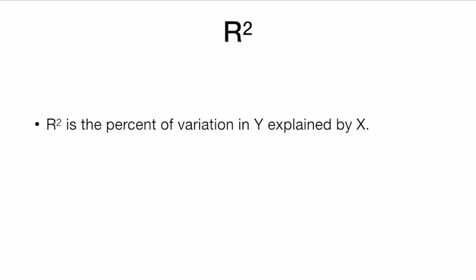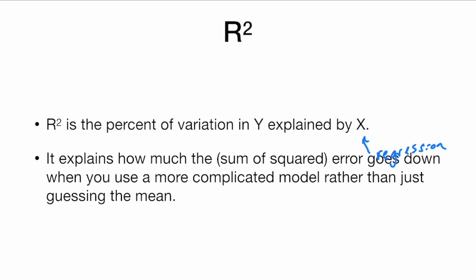To recap, R-squared is the percent of variation in Y explained by X, or explained by the regression line based on predicting Y from X. It explains how much the sum of squared errors goes down when you use a more complicated model rather than just guessing the mean.